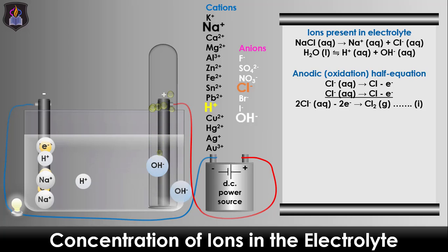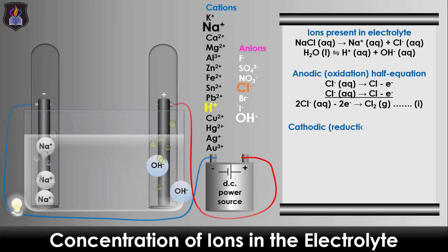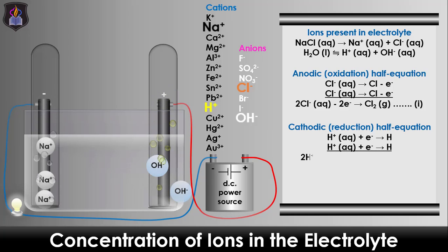The hydrogen ion therefore undergoes reduction to form hydrogen gas at the cathode. Combining the two half equations gives the overall cell reaction.